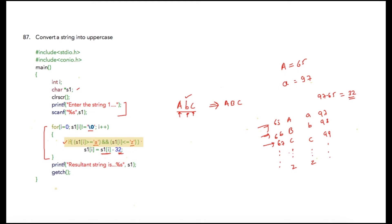This condition will be executed only when we found a small character in the string and we will convert it into an uppercase. This loop will be executed for all the values and at the end of it our resulting string will be printed as capital A B C.